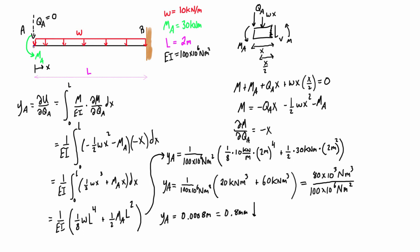So there we go. That is how we use a dummy load to find deflection in a beam using Castigliano's theorem where there isn't actually an applied point load.